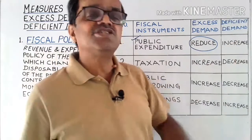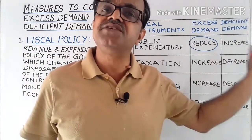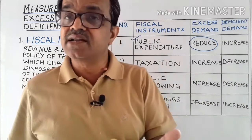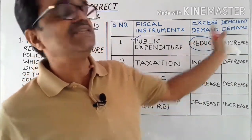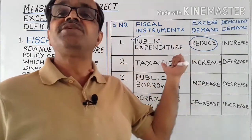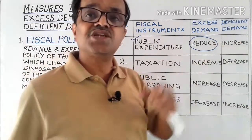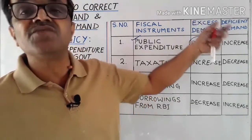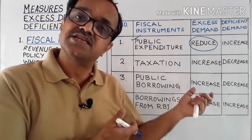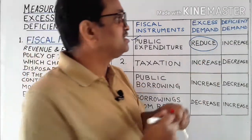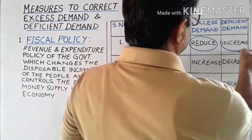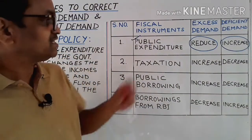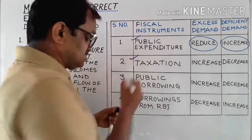In the case of deficient demand, aggregate demand is less in comparison to aggregate supply. So the government will increase its public expenditure on various programs, policies, projects, and constructions. That will increase the disposable income of the people, which will lead to an increase in aggregate demand.